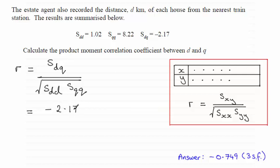And that's all divided by the root of SDD, which is 1.02, and that's multiplied with SQQ, which is 8.22.